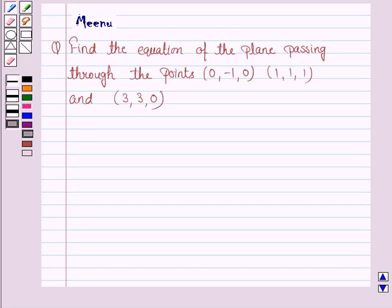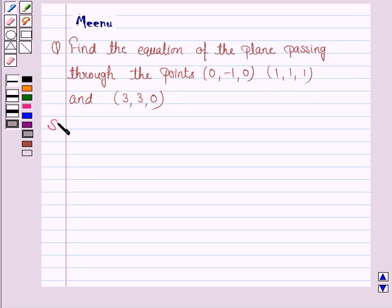Hello students, let's work out the following problem. It says: find the equation of the plane passing through the points (0, -1, 0), (1, 1, 1), and (3, 3, 0). So let's now move on to the solution.